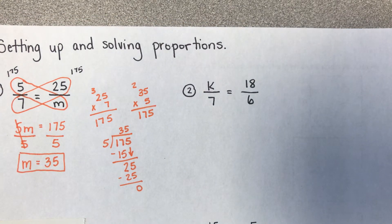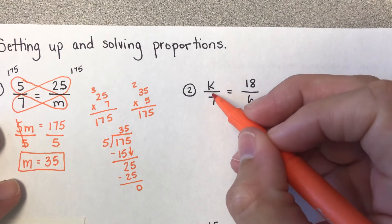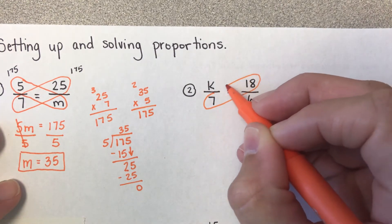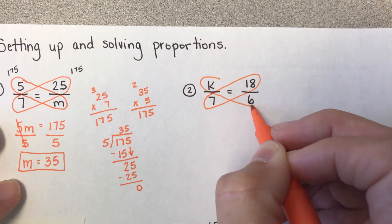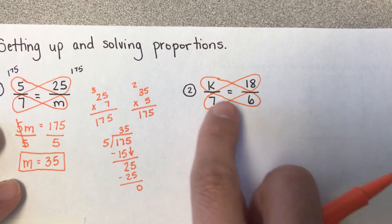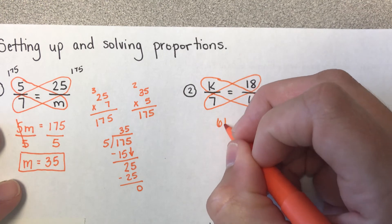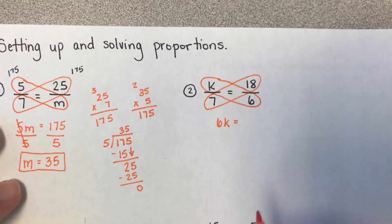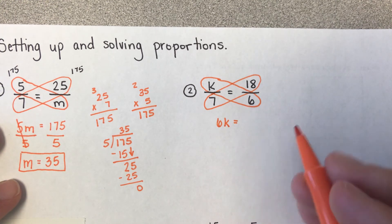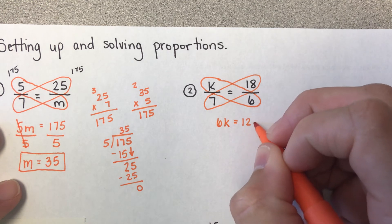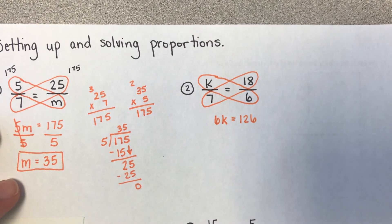Let's look at this next one. Same thing, it's already set up for me. It doesn't matter where your variable goes—top, bottom, left, right. It doesn't matter. We'll solve it the same way either way. So I've got to cross multiply. 6 times k gives me 6k. 7 times 18 gives me 126.